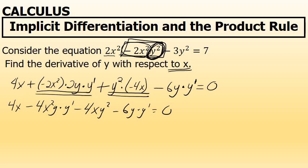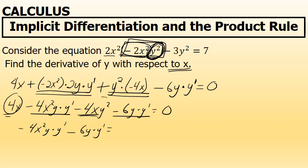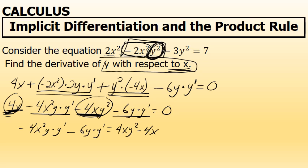At this point I have four terms on the left. Two of those terms have a factor of y prime and two do not. I'm going to leave the two terms with y prime on the left and move the two terms without y prime to the right. To do that, I'll add 4xy squared to both sides and subtract 4x from both sides. All of this is being done on my way to isolating y prime, since my final answer should be y prime equals some expression.